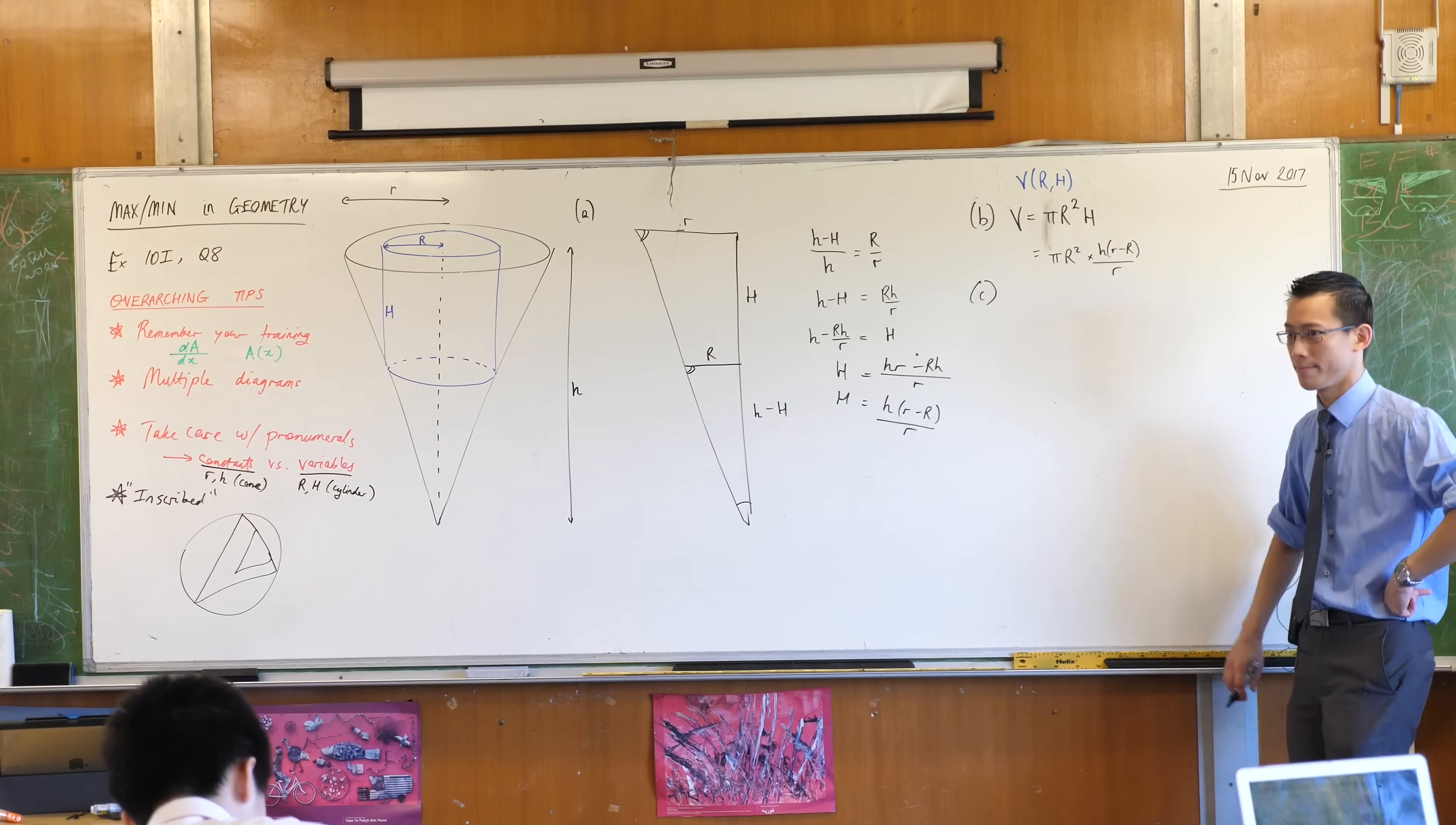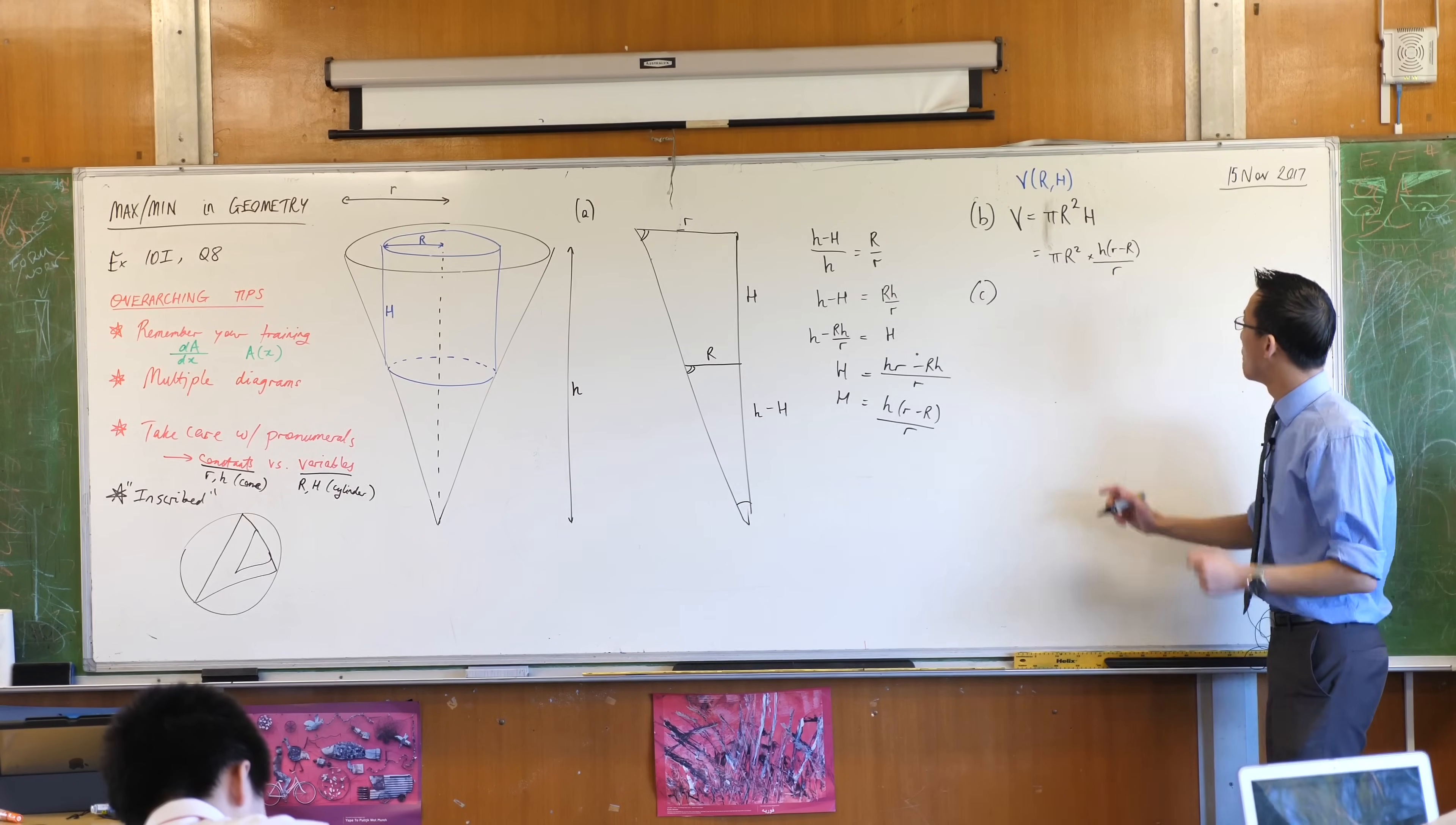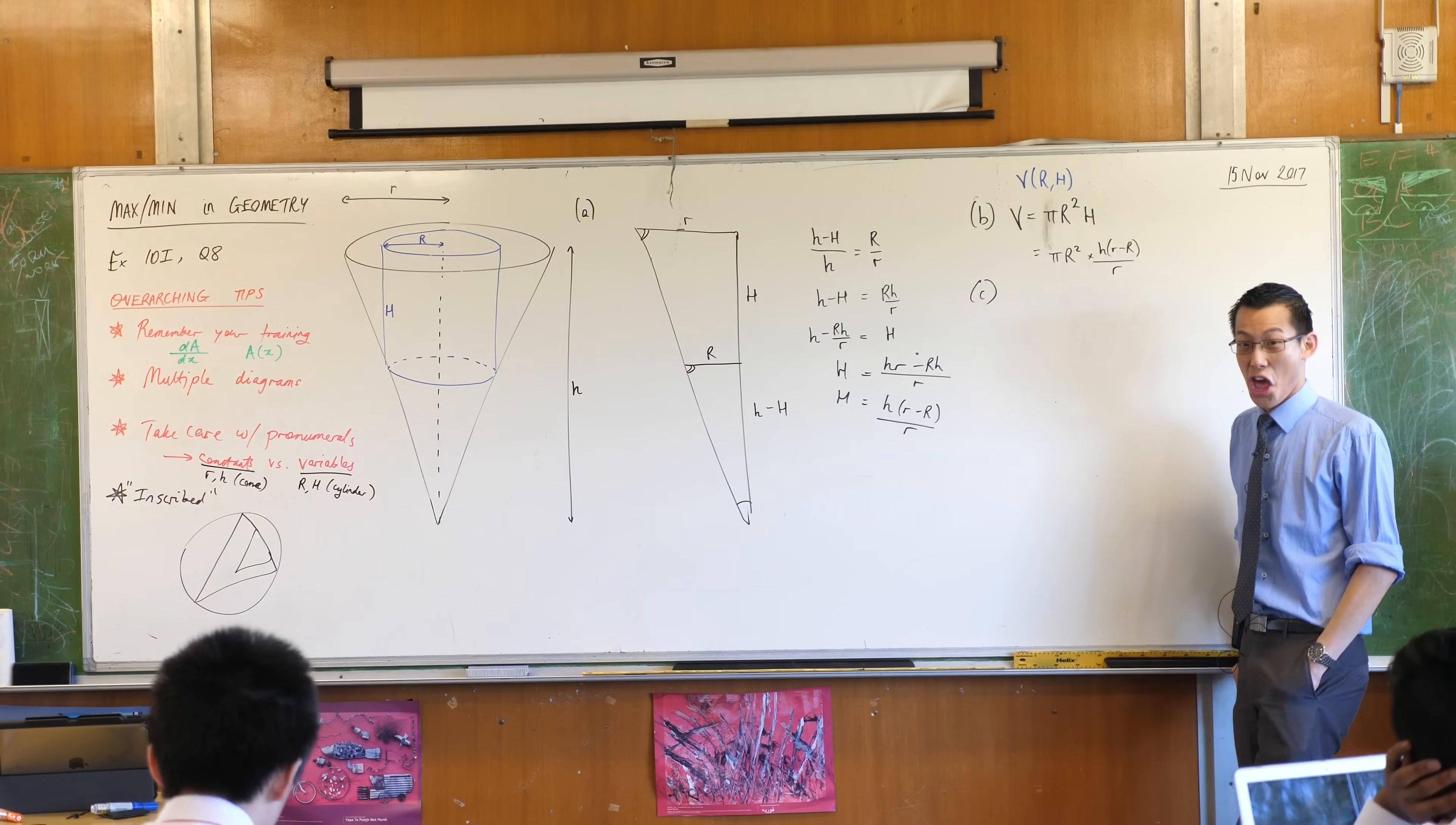Now this is turned into a max-min question properly. So what am I going to do with this thing? What do you do with normal max-min questions? You find the derivative. Let's differentiate this thing. It looks like a quotient. Do I do quotient rule?